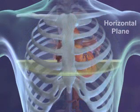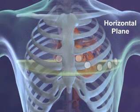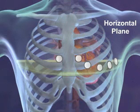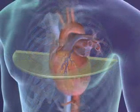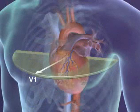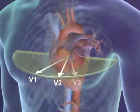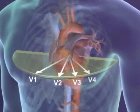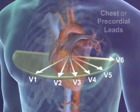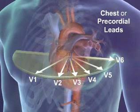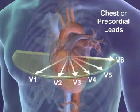The horizontal plane requires six additional electrodes positioned meticulously on the chest around the heart. Each of the six leads, measuring from the center of the heart to the electrode on the chest, provides an additional view. These are called the six chest leads, or precordial leads.